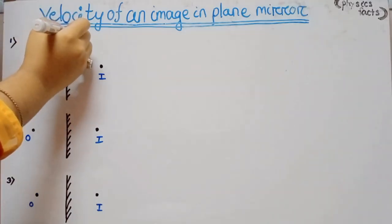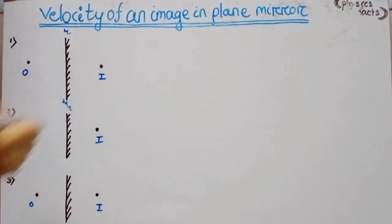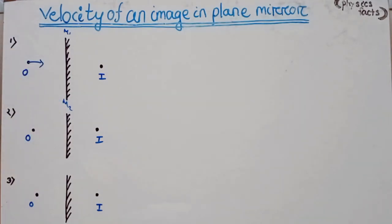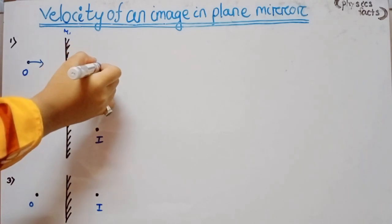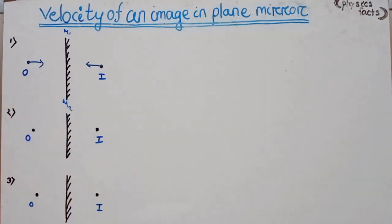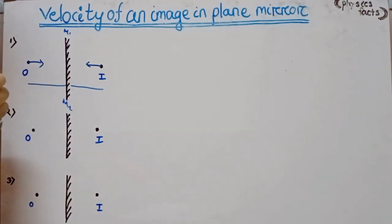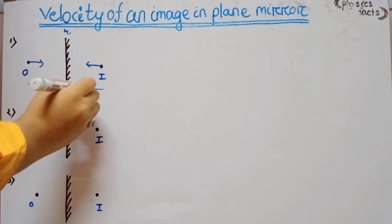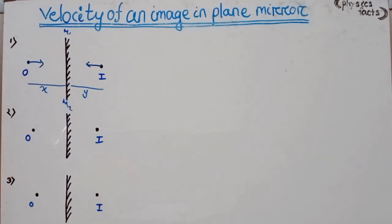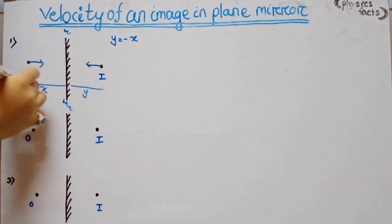Consider a mirror M1M2. If an object moves towards the mirror, the image also moves towards the mirror. A key characteristic of a plane mirror is that object distance equals image distance. According to sign convention, y = -x, where y is the image distance and x is the object distance.